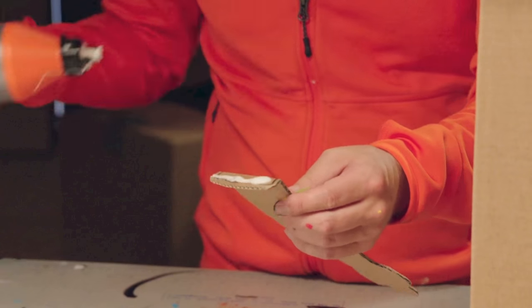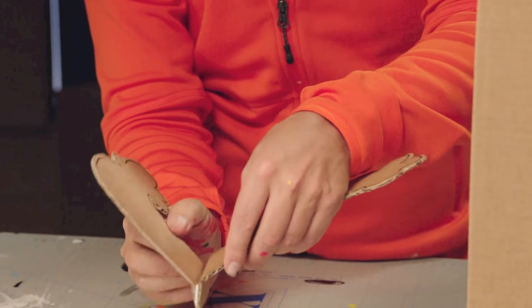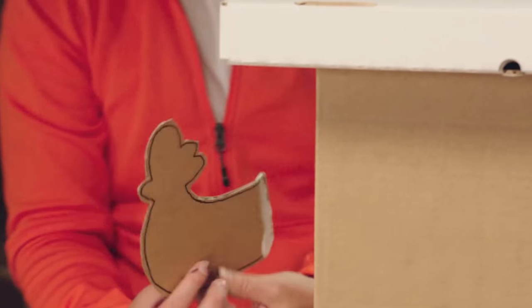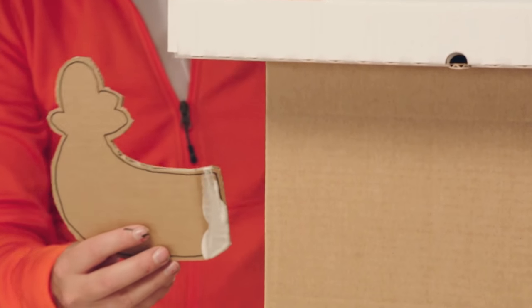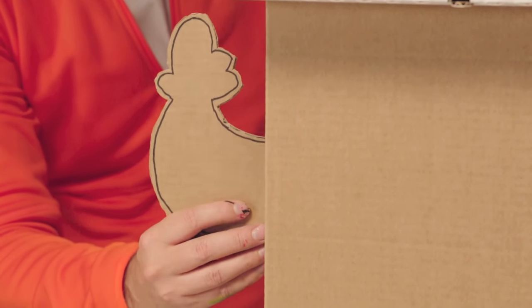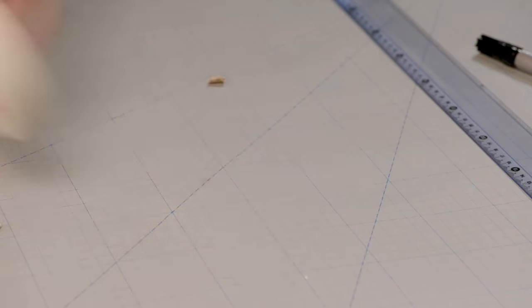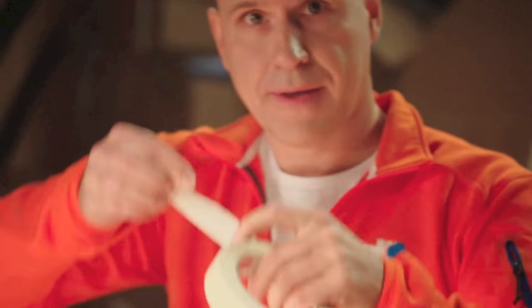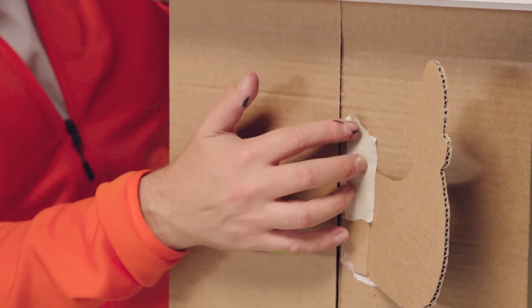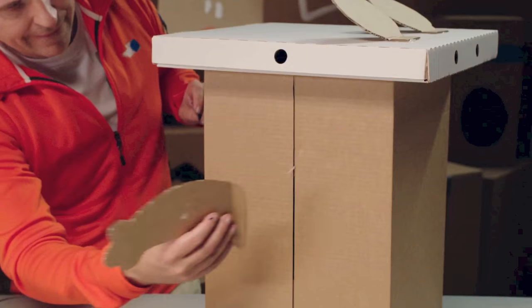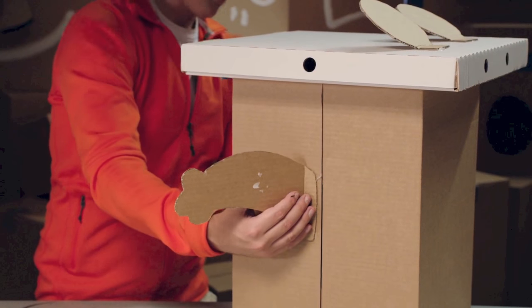Now for the arms. Same procedure as last time. They'll definitely need one or two pieces of tape or they'll fall off. You can remove the tape when the glue is dry. Now the other arm. Don't forget to check that they are more or less the same height.